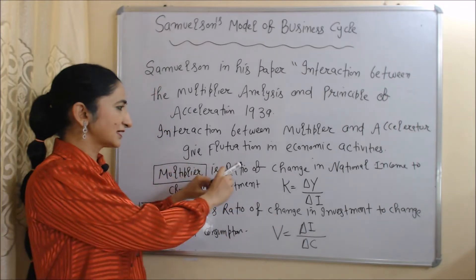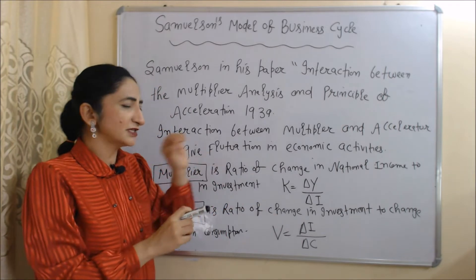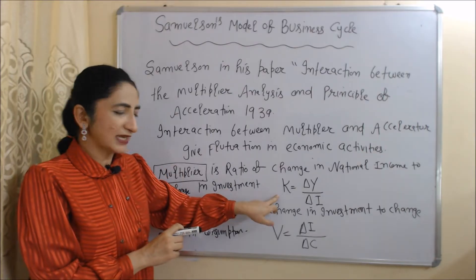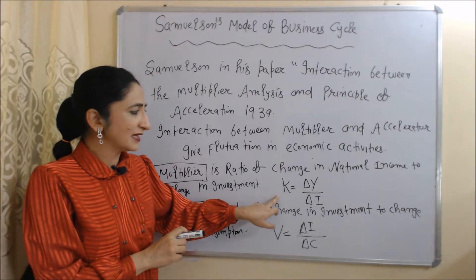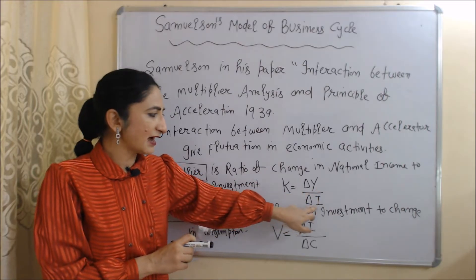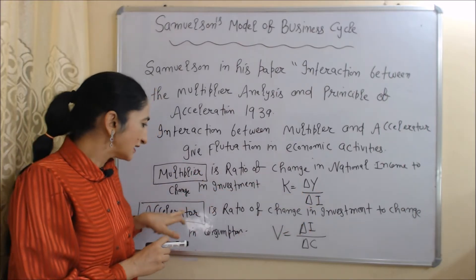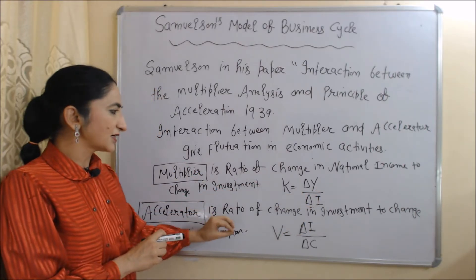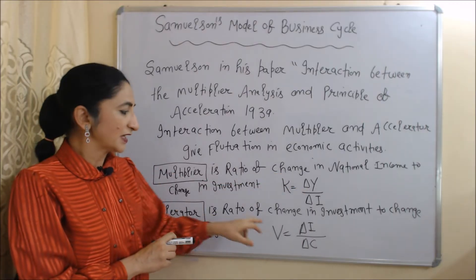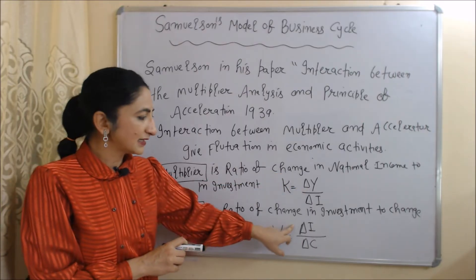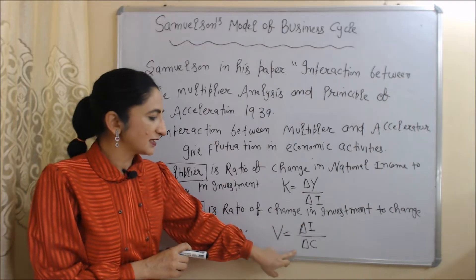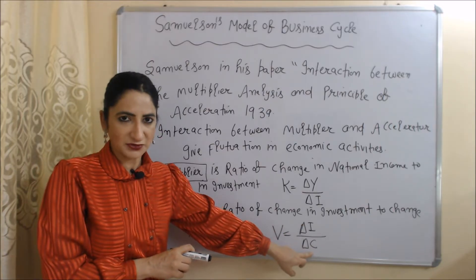As we know, the Multiplier is the ratio of change in national income to change in investment. Here K is the Multiplier, Delta Y is change in income, and Delta I is change in investment. And the Accelerator is the ratio of change in investment to change in consumption. Here V is the Accelerator, Delta I is change in investment, and Delta C is change in consumption.